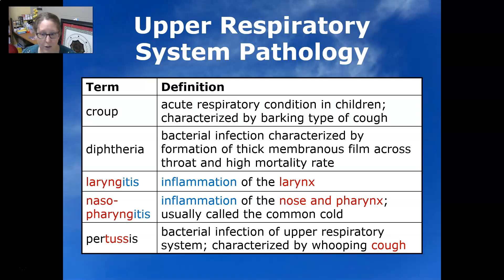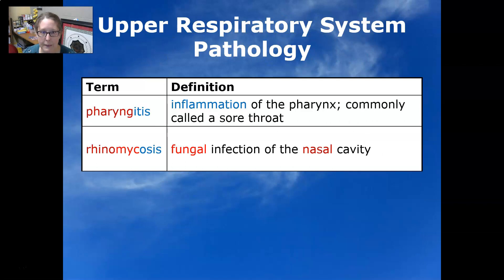Nasopharyngitis is usually called the common cold. Pertussis is a bacterial infection of the upper respiratory system characterized by a whooping cough — that's its other name, whooping cough. Pharyngitis is an inflammation of the pharynx, commonly called a sore throat. Rhinomycosis is a fungal infection of the nasal cavity.